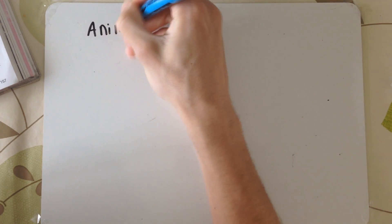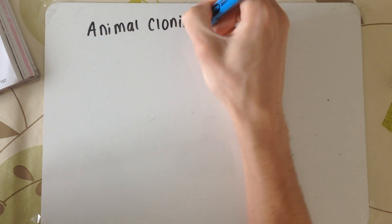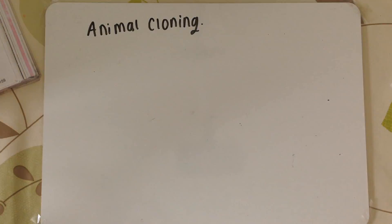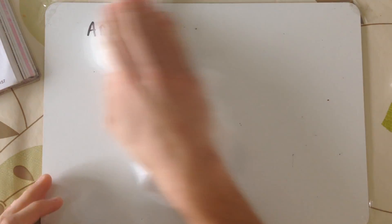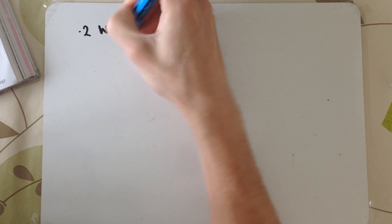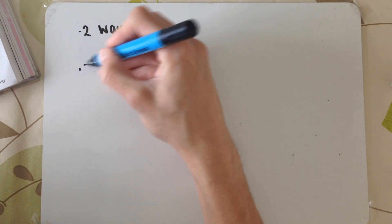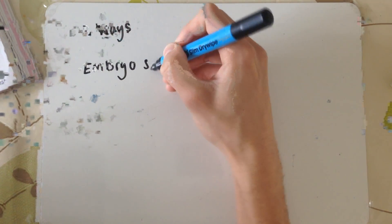A couple of videos back we did plant cloning. Today we have animal cloning, which is slightly more complicated. I'm just going to work through the whole genetic engineering topic in videos with my book in front of me, and I'm just going to do F214 and F215 afterwards.